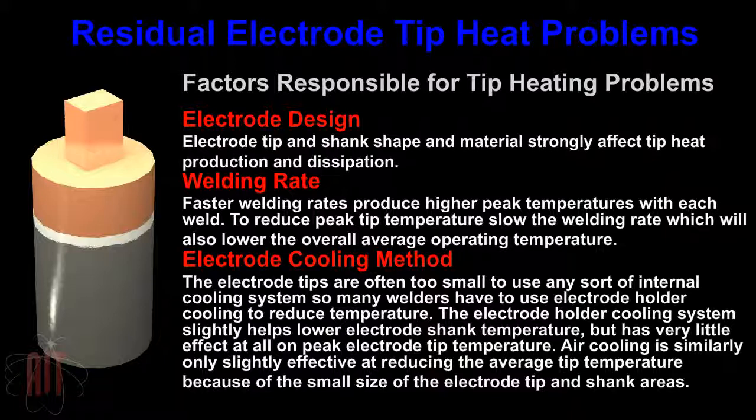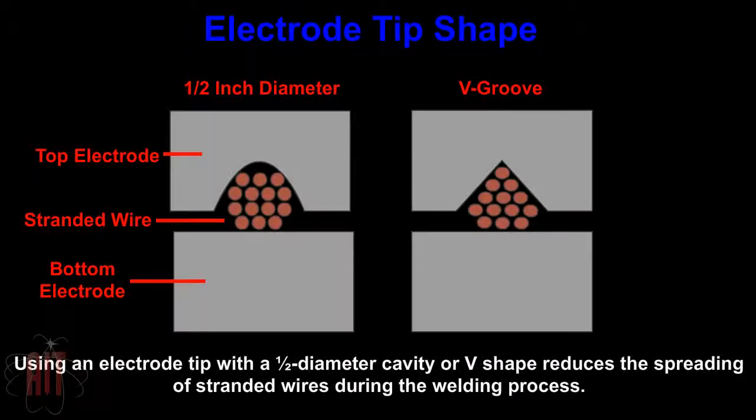Electrode tips are often too small to use any sort of internal cooling system, so many welders have to use electrode holder cooling to reduce temperature. The electrode holder cooling system slightly helps lower electrode shank temperature but has very little effect on peak electrode tip temperature. Air cooling is similarly only slightly effective at reducing the average tip temperature because of the small size of the electrode tip and shank areas.